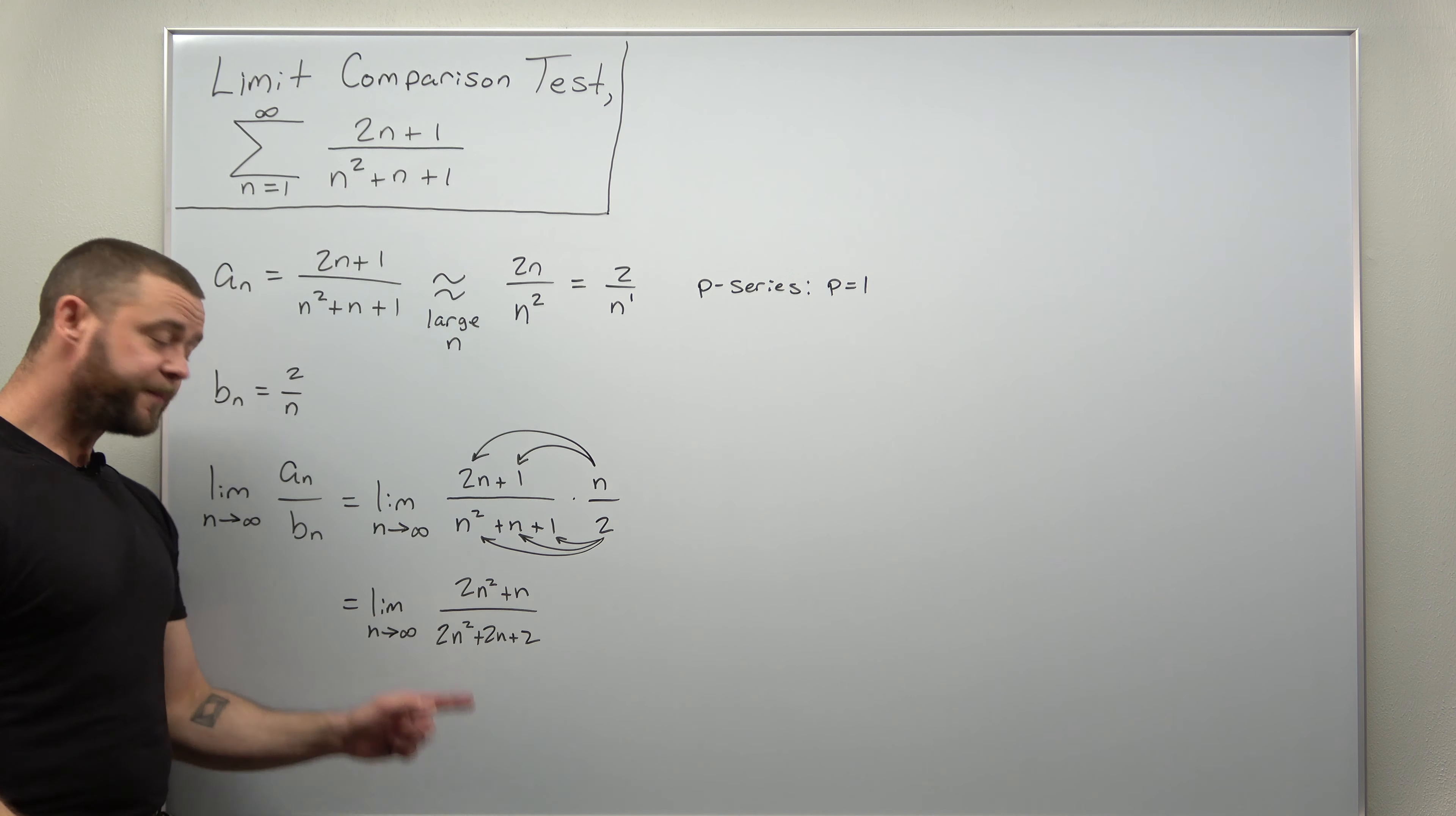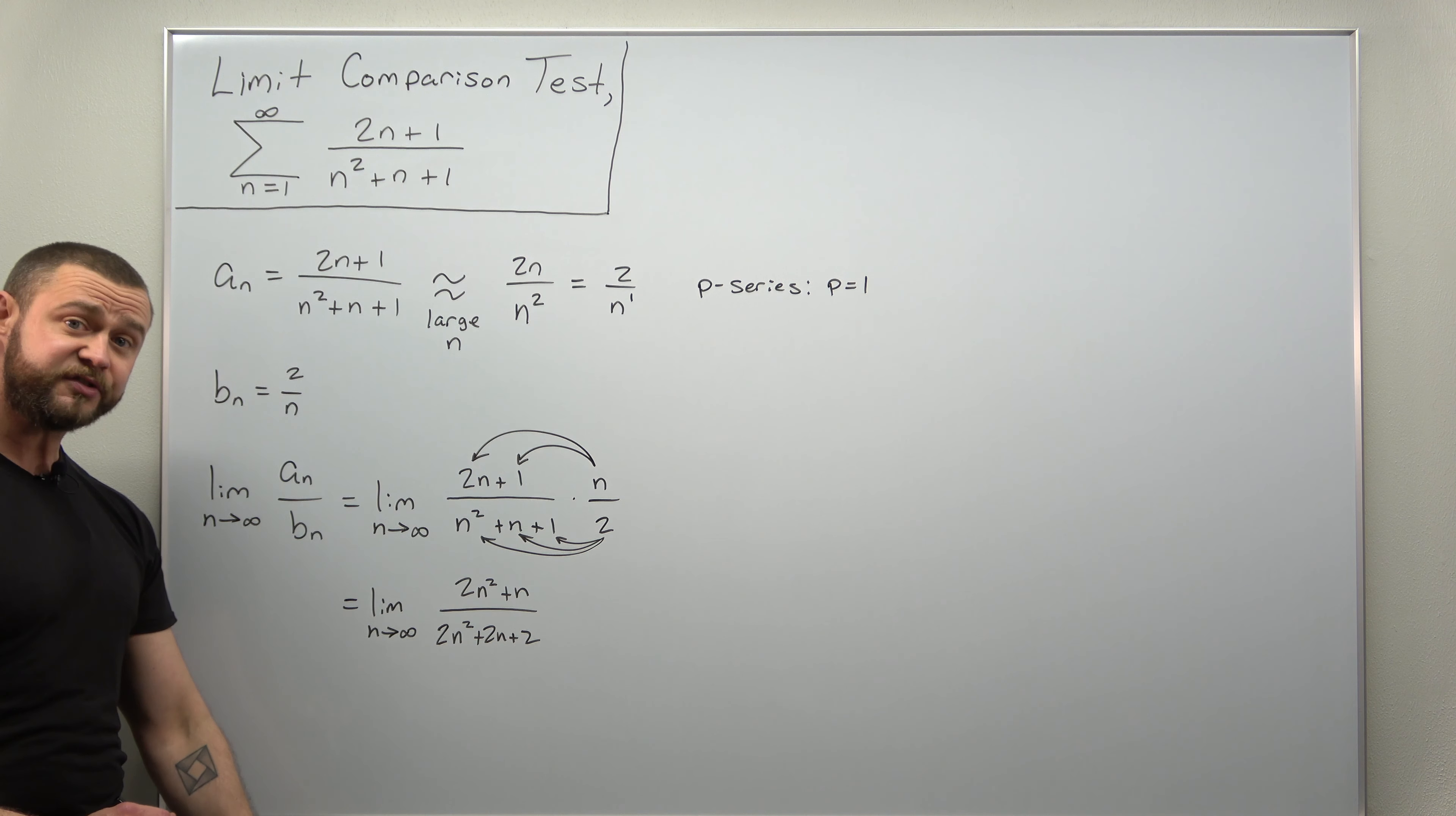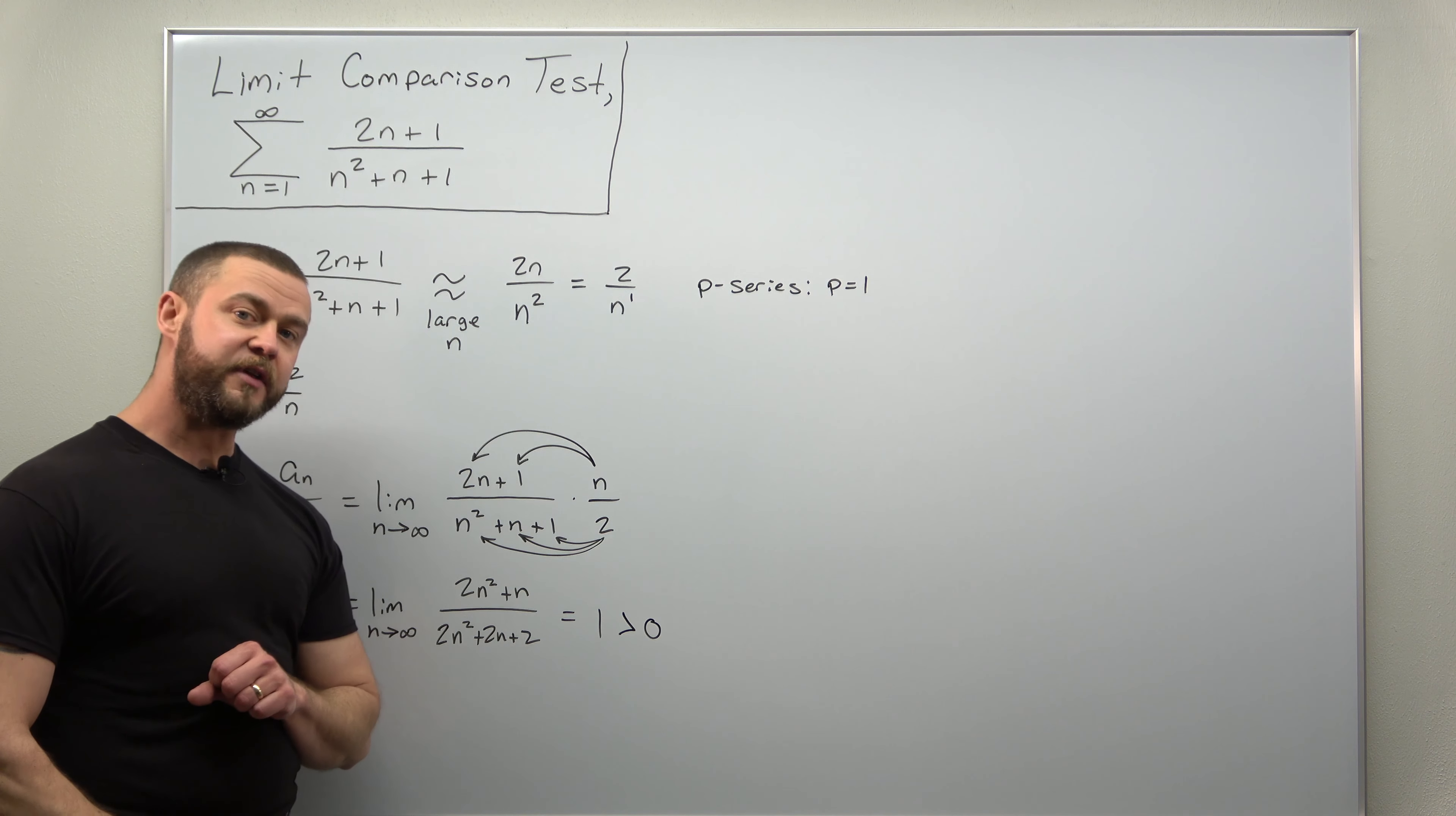And if you go through this limit, this is a good one to apply L'Hopital's rule to. You could also notice due to the powers of n, they are of the same power in the numerator and denominator. So the limit here should be the ratio of the leading coefficients for the highest power of n. Either way, you should find this limit comes out to 1, which is a finite number that is greater than 0.